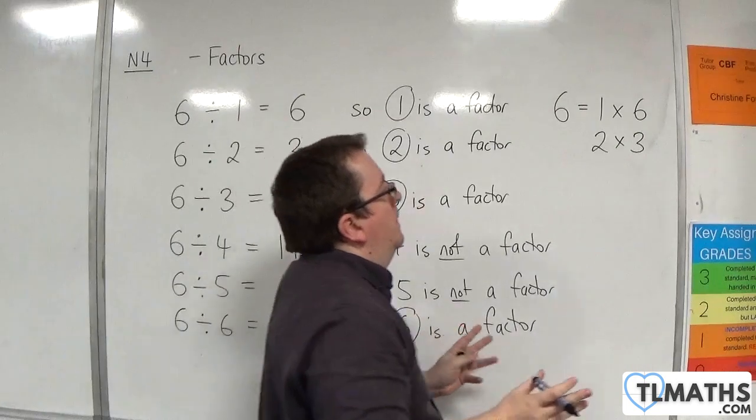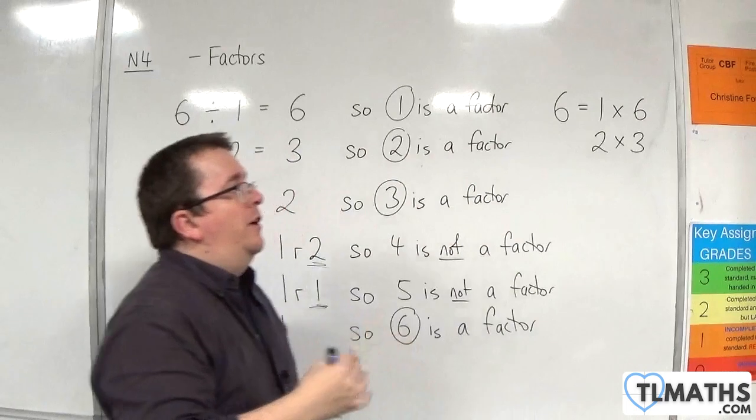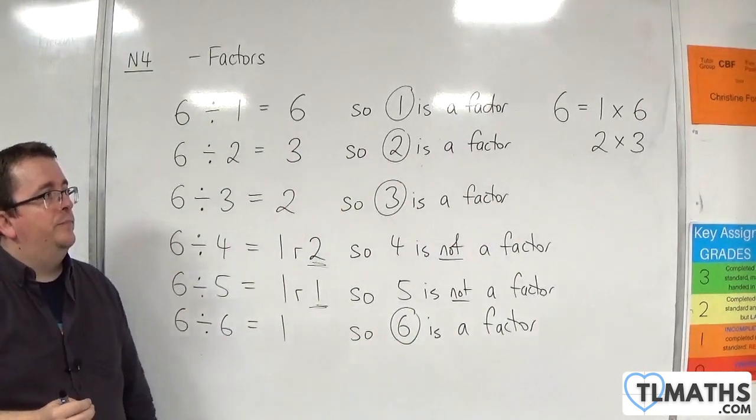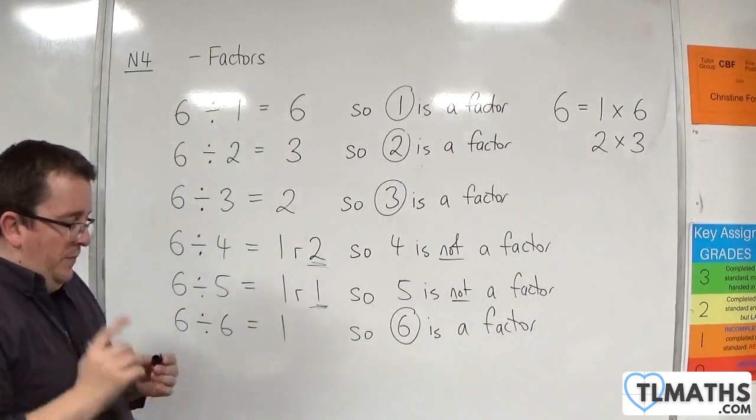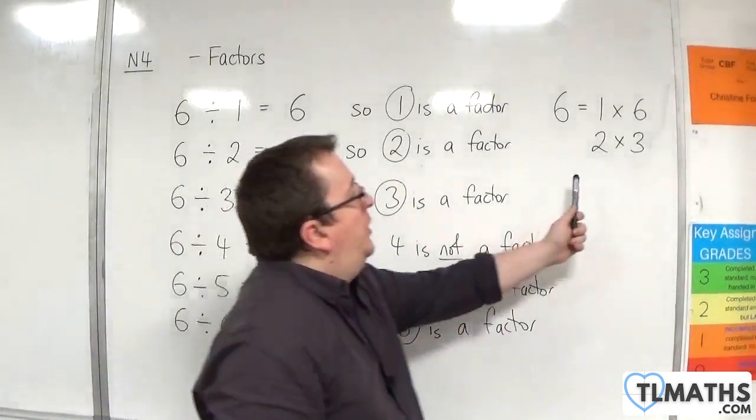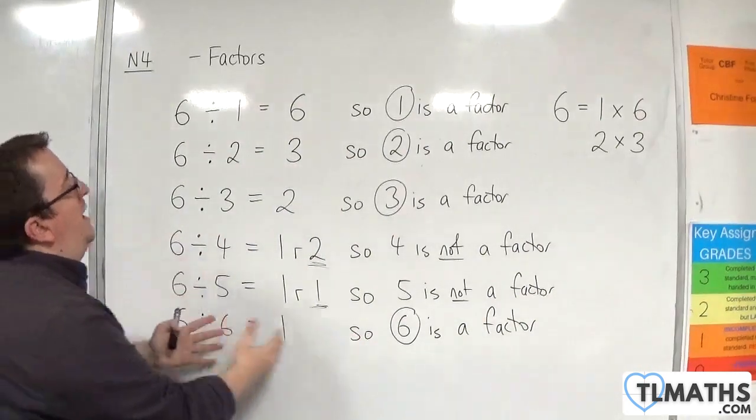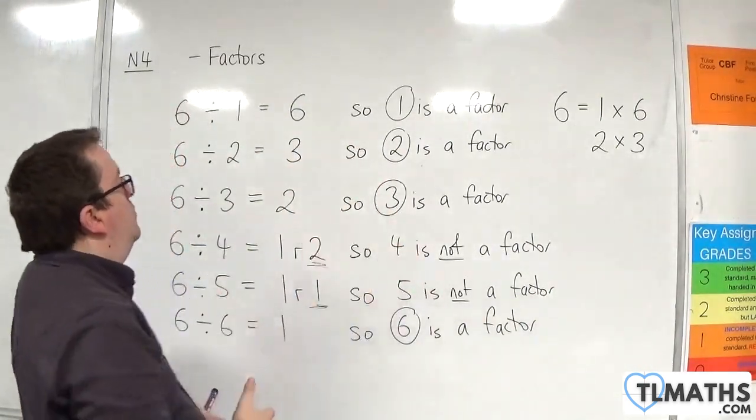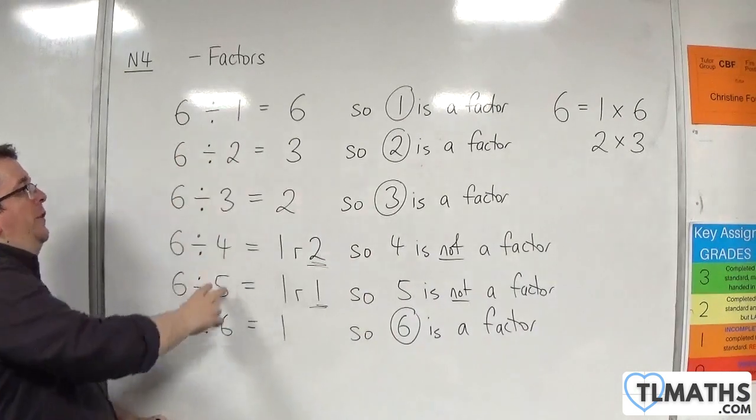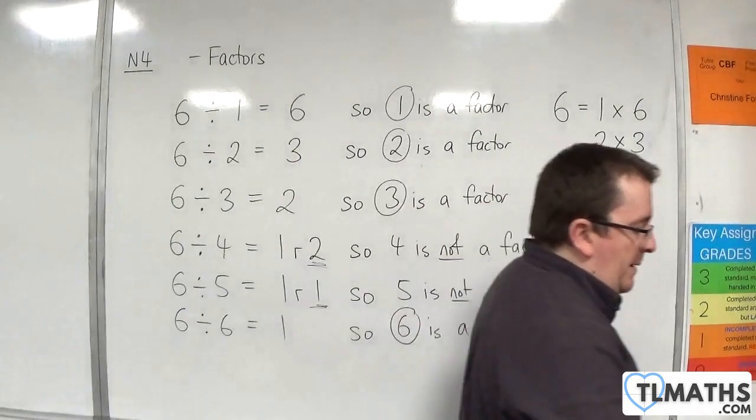If you read it off, you've got 1, 2, 3, 6. These are your factors of 6. Let's look at another example by just using this method and separating it out this way. We don't want to have to keep dividing through by all of the integers from 1 up to the number we're considering.